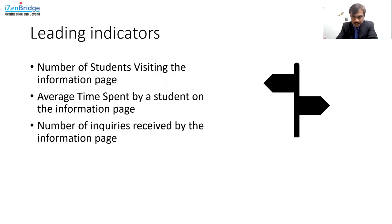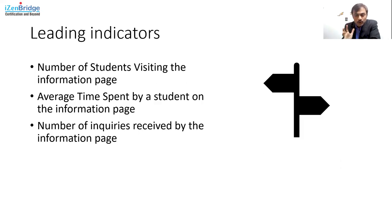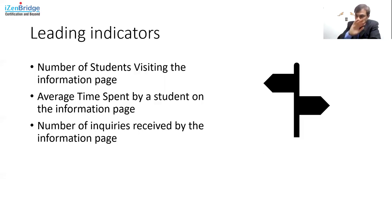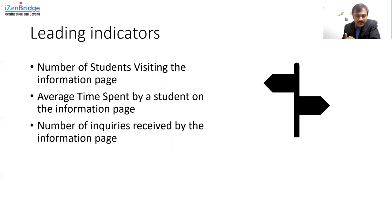How do we know we are succeeding? Looking at leading indicators for this EPIC, we focus on the number of students visiting the information page. The whole idea of this EPIC is acquisition of leads — good quality leads that our operational value stream can make use of. First, I need visitors on my page, then they should study what I'm offering. If I'm unable to attract visitors, there is no use of developing the whole thing. Leading indicators are: number of students visiting the information page, average time spent by students on that page, and number of inquiries received from the information page.